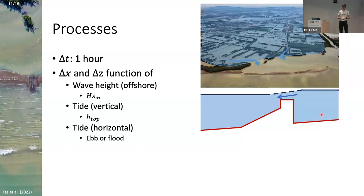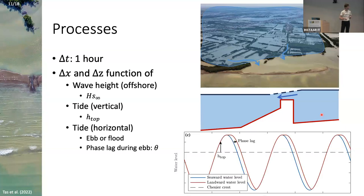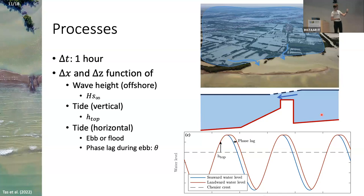As a result, we get a water level gradient, because the water level on the seaward side is already lower than the outflow from the coastal plain. The way we integrated this in our model is by introducing a phase lag. The blue line is the seaward water level — a very simple tide — and then landward, during ebb, we actually paused high tide for a bit, and then it followed the same curve. As a result, at the same time you have a different water level on both sides of the chenier.